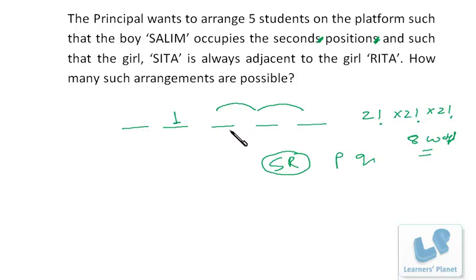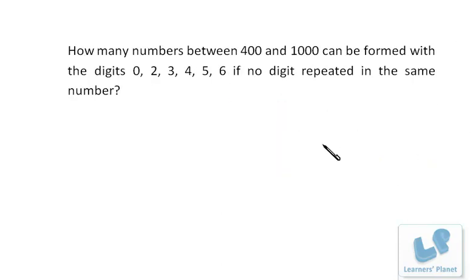So 2 into 2 into 2, that is 8 ways are there. Let me repeat it once again. S and R we just have two adjacent positions over here. So S and R can sit in 2 factorial ways. Then S and R can mutually arrange themselves in 2 factorial ways, that is S-R or R-S here, or maybe S-R, R-S here. Then for the two remaining positions P and Q can sit in 2 factorial ways. So in all, 8 ways are there.